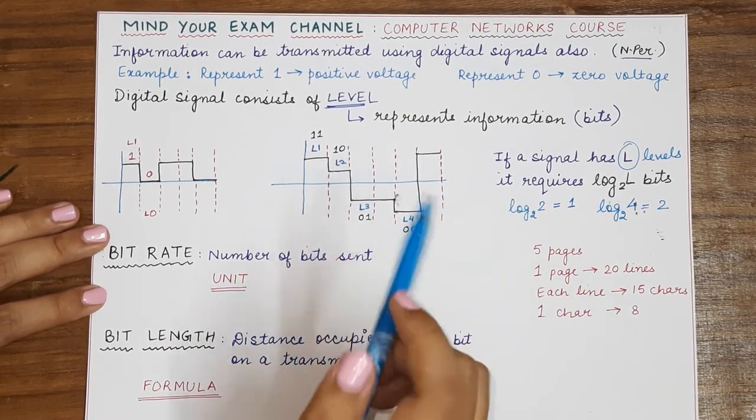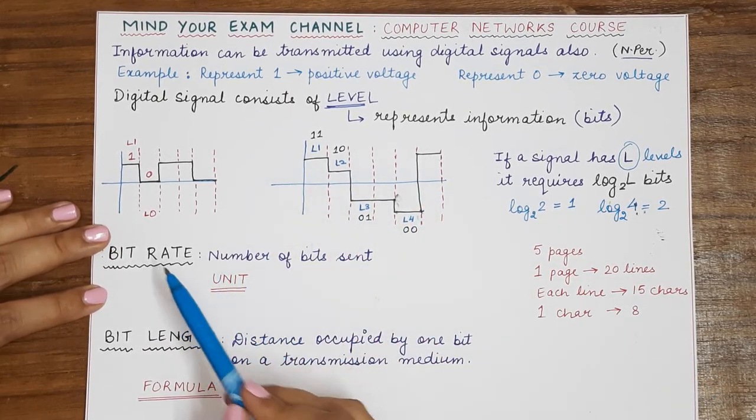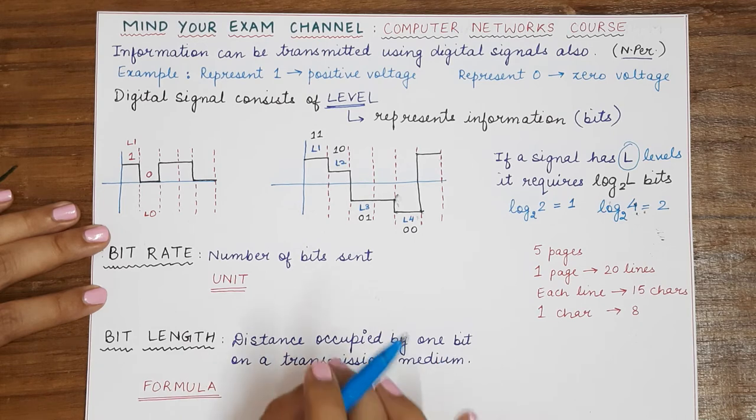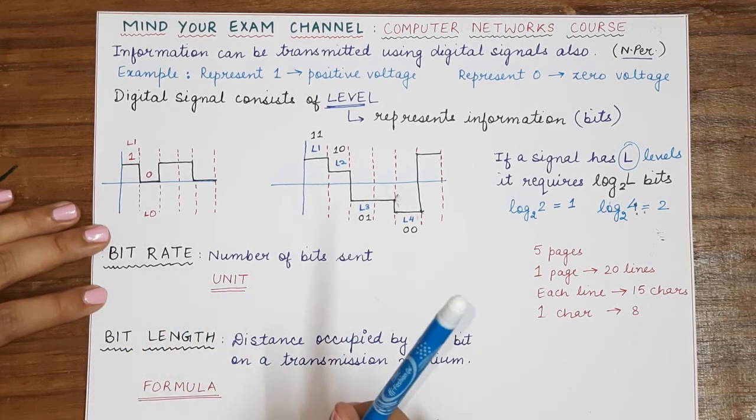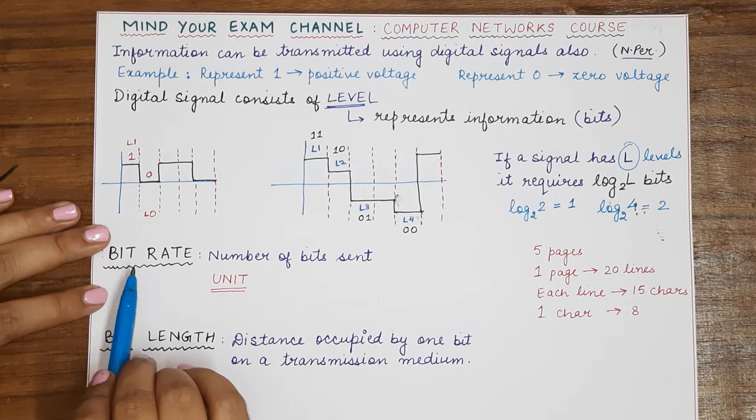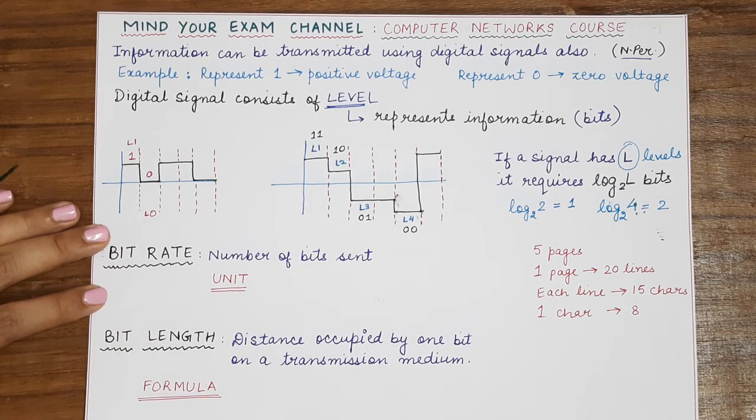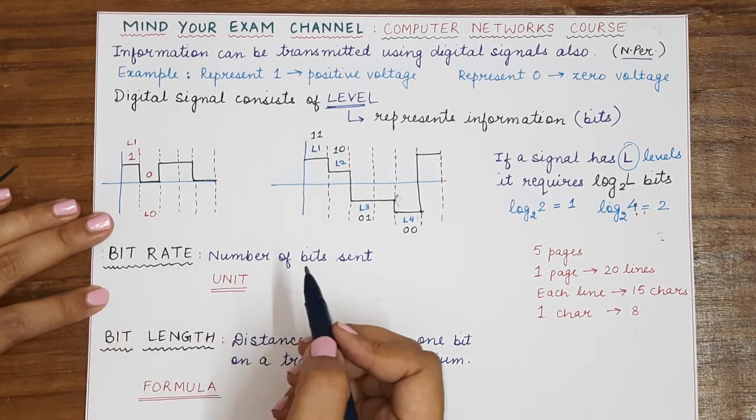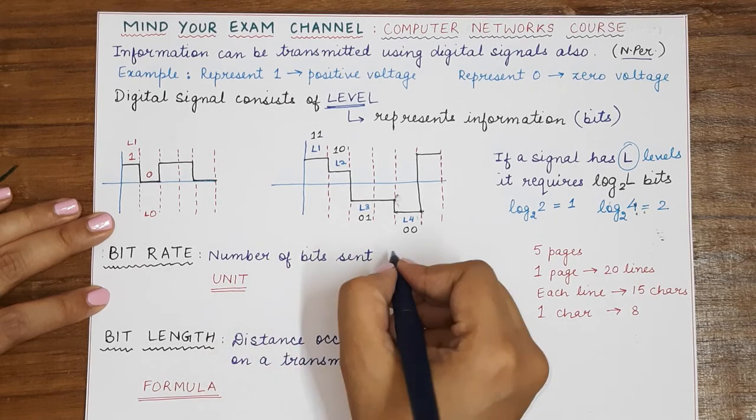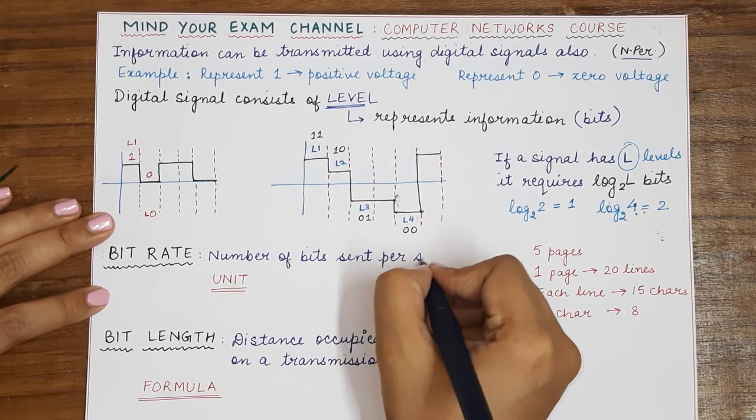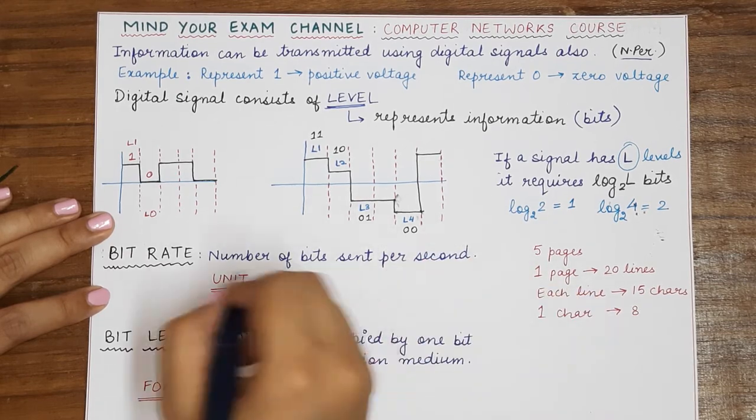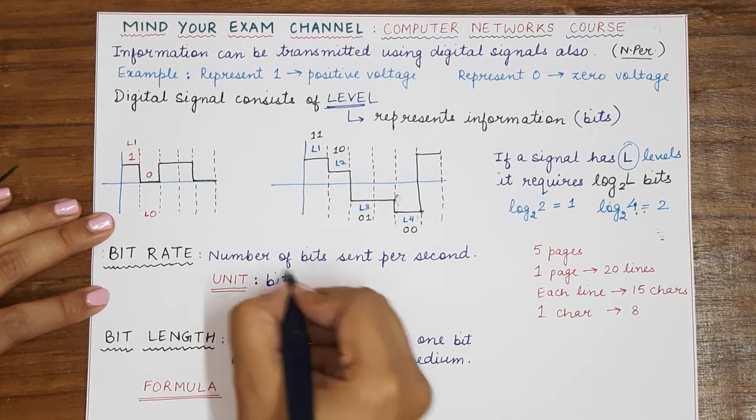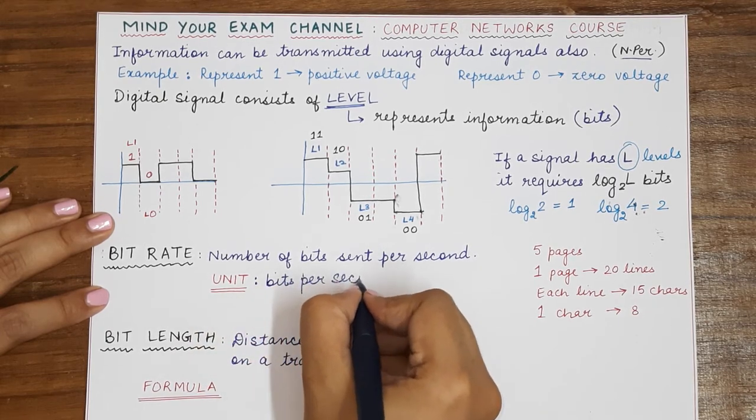So now coming to two important concepts of bit rate and bit length. Now in the analog signal when we studied about them, we studied the concept of period and frequency. But when we talk of digital signals, we do not talk in terms of frequency, rather we talk in terms of bit rate. So bit rate basically defines the number of bits sent per second.